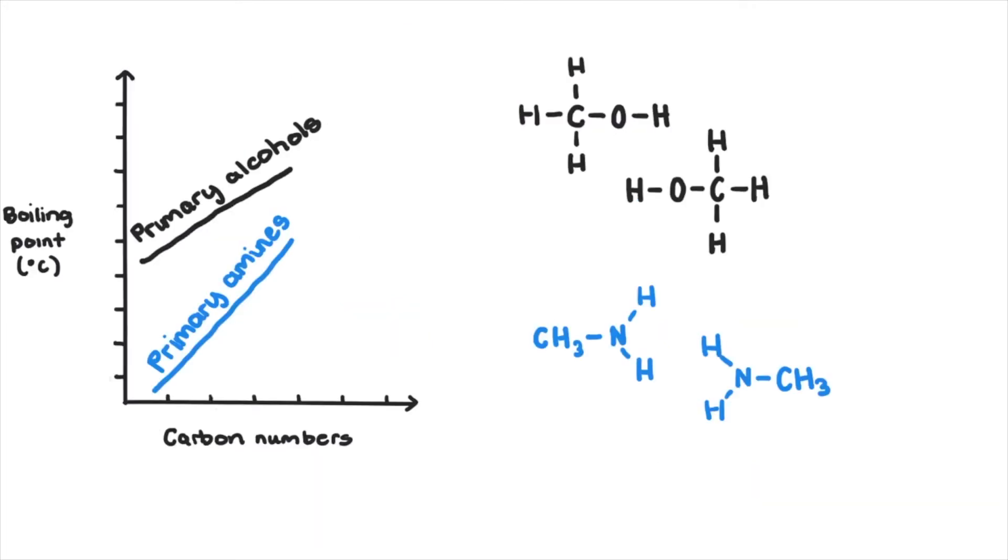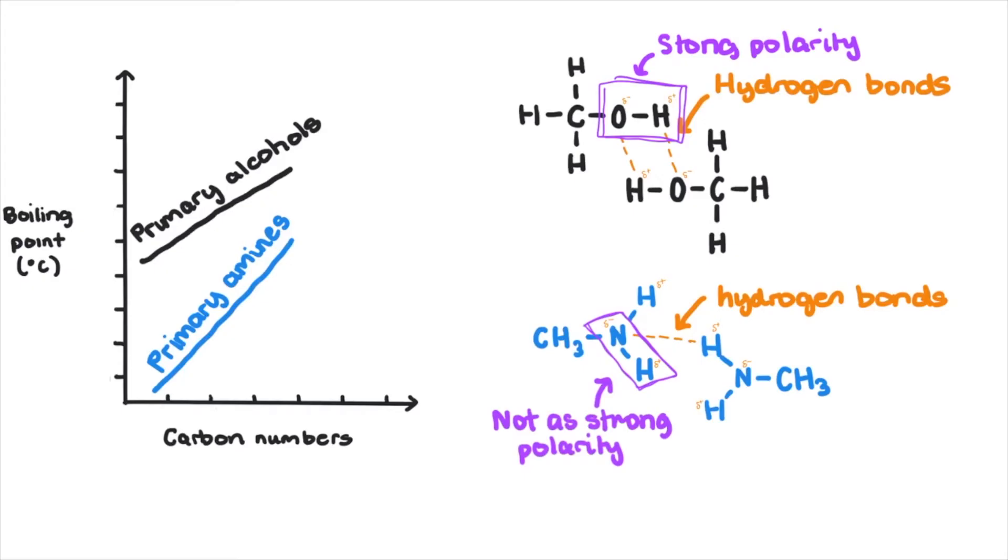Like all homologous series, the boiling point of amines increase with carbon chain as there are more dispersion forces occurring. But when comparing primary amines to primary alcohols, it's alcohols that win this battle as the hydrogen bonding between neighboring alcohols is stronger than the hydrogen bonding between neighboring amines. This is because the polarity between the OH bond is much stronger than the polarity between the NH bond as oxygen is more electronegative. Therefore, more energy is needed to overcome the intermolecular forces.